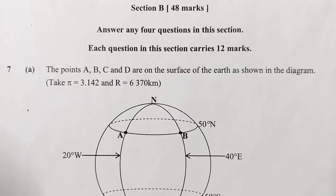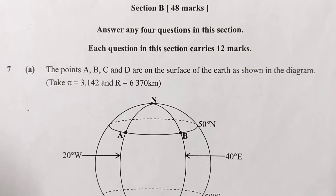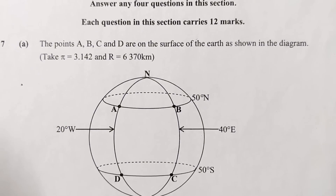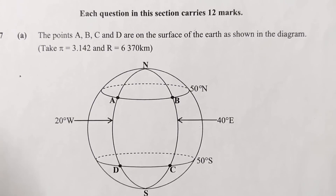It is on Earth Geometry. The question reads: the points A, B, C, and D are on the surface of the Earth as shown in the diagram. Take pi equal to 3.142 and R equal to 6,370 kilometers. So this capital R is the radius of the Earth. So this is our diagram showing the points A, B, C, and D.